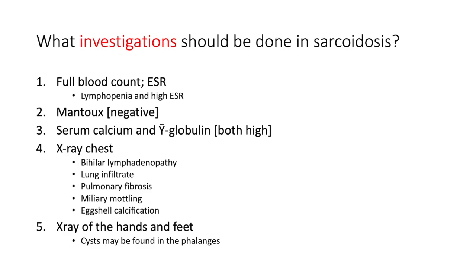Chest X-ray follows the Scadding classification — look out for bilateral hilar lymphadenopathy, lung infiltration, pulmonary fibrosis, miliary mottling, and eggshell calcification. X-rays of the hands and feet may reveal cysts in the phalanges.